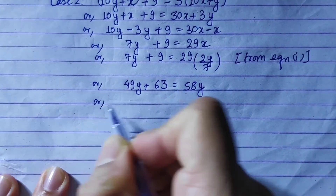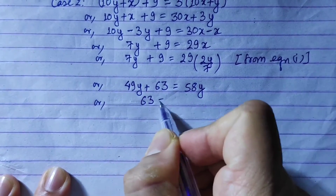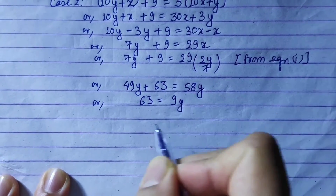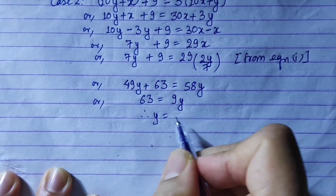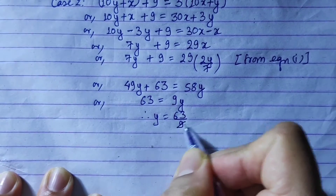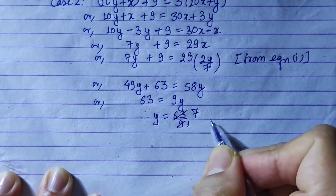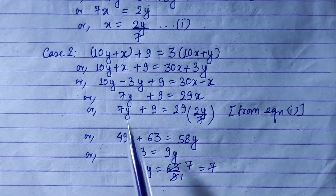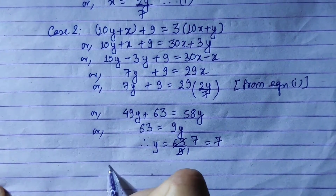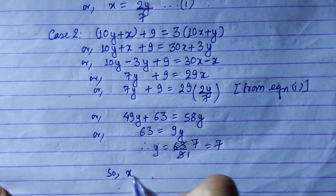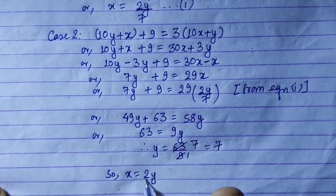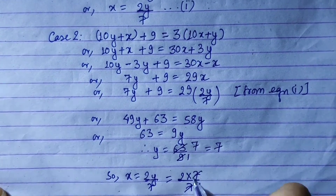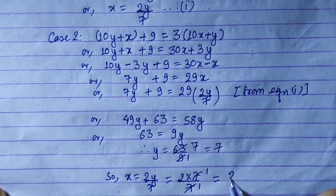Further simplifying: 63 minus 49 gives us 9y. Therefore y equals 63 divided by 9, which equals 7. So y is 7. Now finding x: x equals 2y divided by 7, which is 2 times 7 divided by 7. The 7s cancel, so x equals 2.